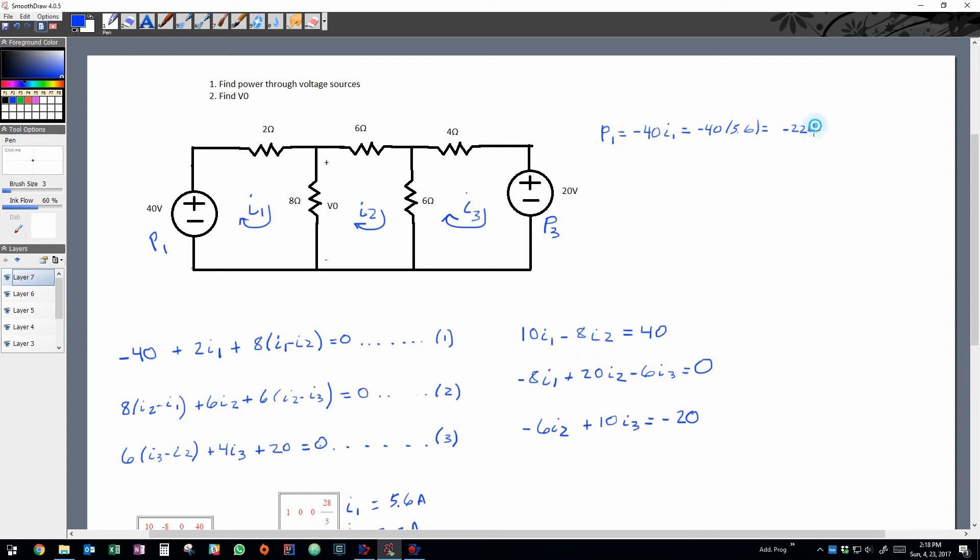And taking the same approach for the power through voltage source number three, we're actually going to get a power of negative 16 watts.